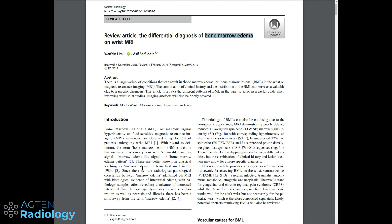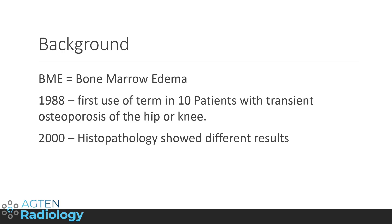What they argue is that there is little radiological-pathological correlation between bone marrow edema and what you actually see under the microscope — which is actually true. The term bone marrow edema was first used in a publication in 1988. In that article they had 10 patients with transient osteoporosis of the hip, performed histopathology in four of them, and found no necrosis or anything else, so they came up with the term transient bone marrow edema syndrome.